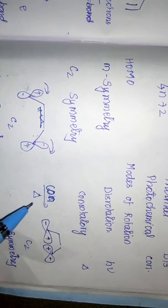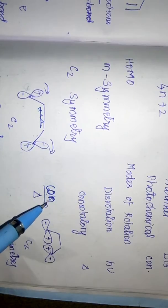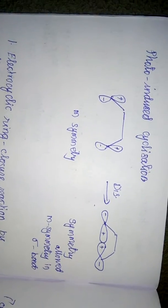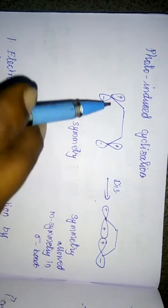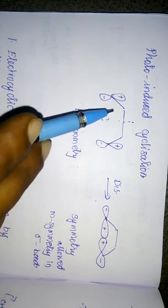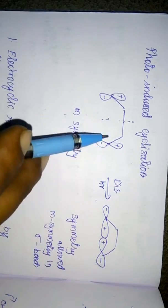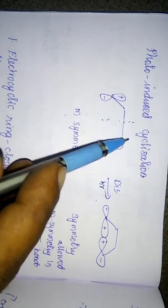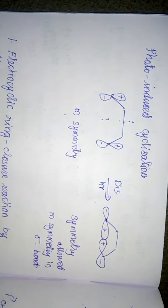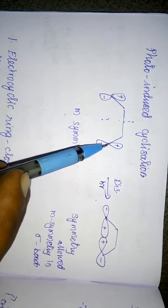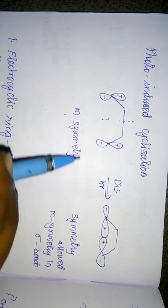For 4π systems under thermal conditions, conrotation applies. Under photochemical conditions, the HOMO has mirror (M) symmetry — a mirror plane reflects one portion onto the other. To preserve this M symmetry, if one carbon rotates clockwise the other must rotate anticlockwise — this is disrotation. Both before and after the reaction, the HOMO symmetry is conserved.